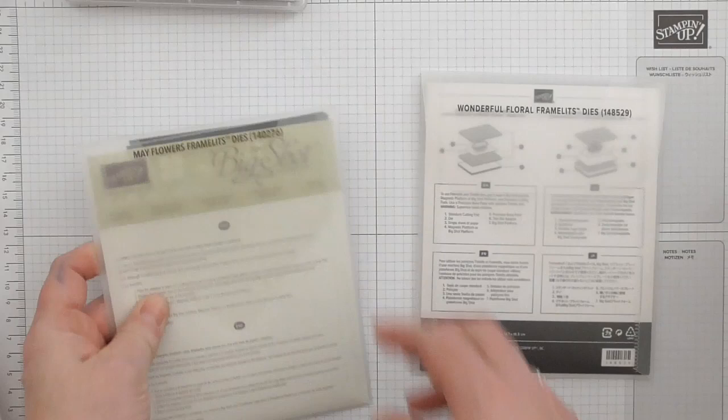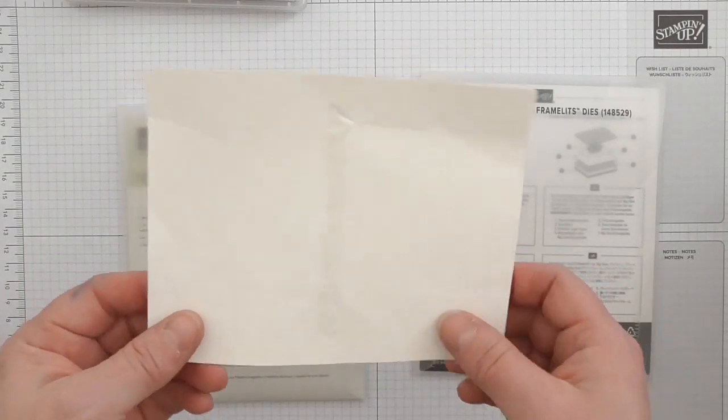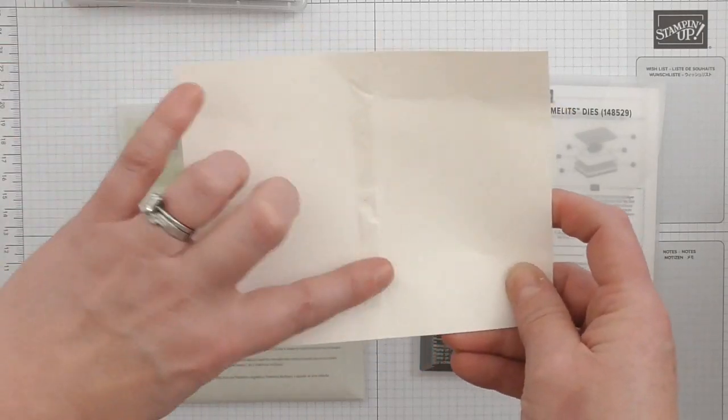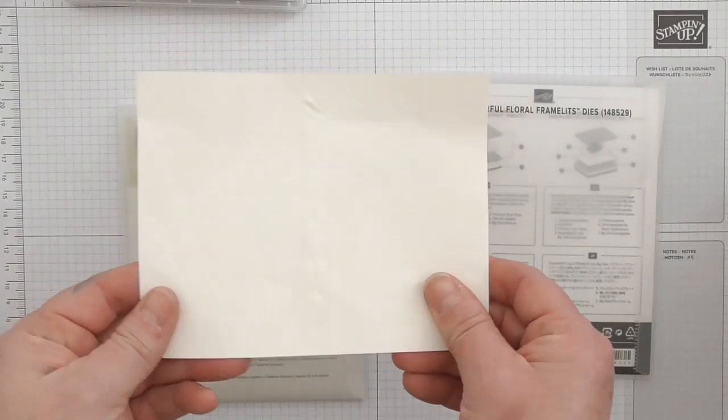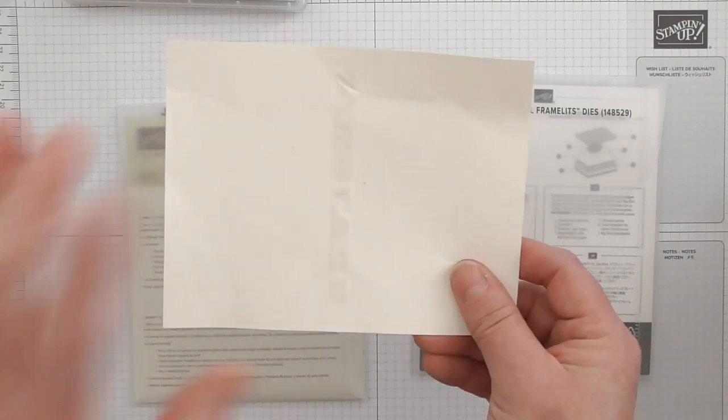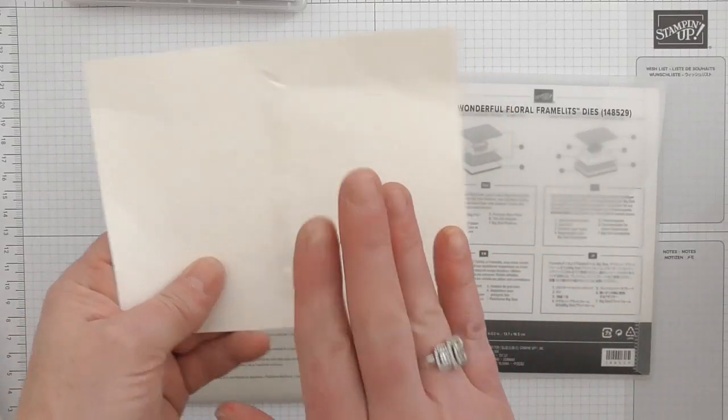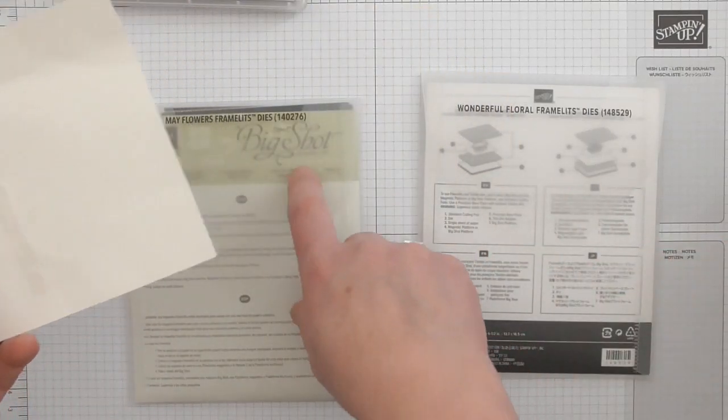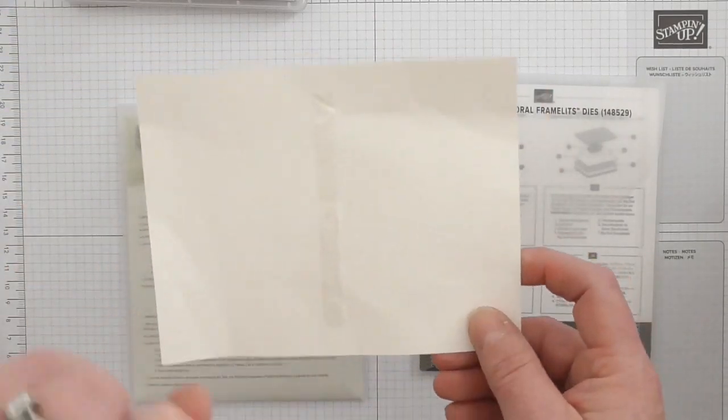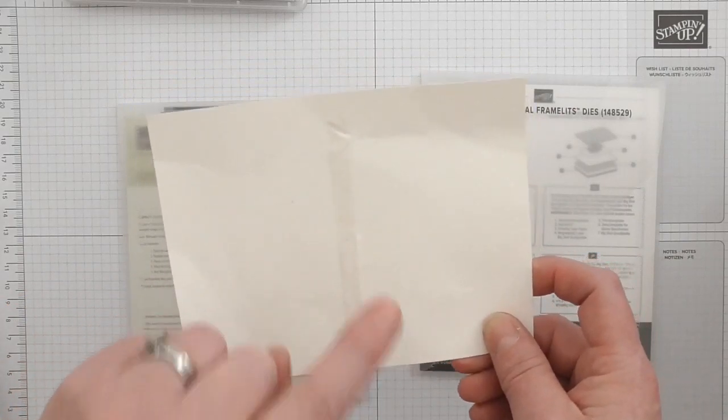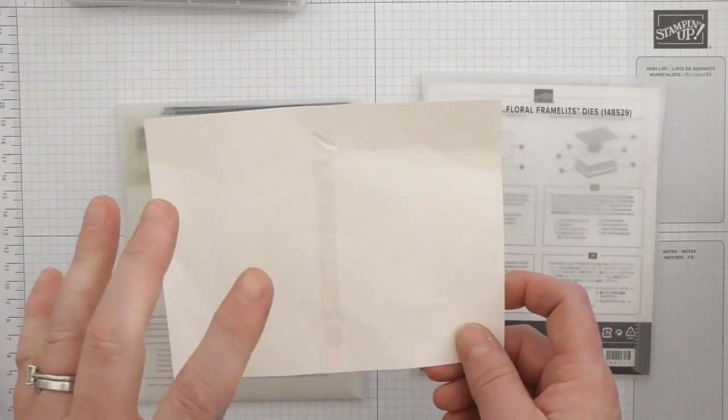So inside the wallets, the dies come on this annoying stuff which is the backer and it's got the sticky strips. That's to keep them flat and safe in transit. I would advise removing your dies from this more or less straight away and get rid of this. Don't then leave this inside or it will stick to your paper sleeve and rip it. You don't want that.